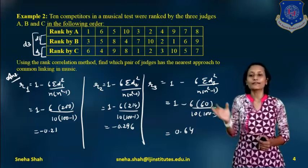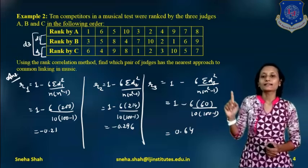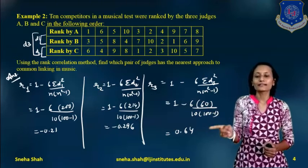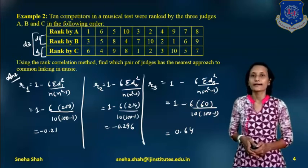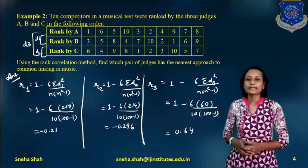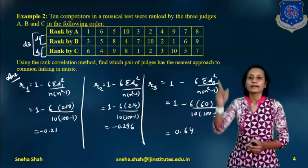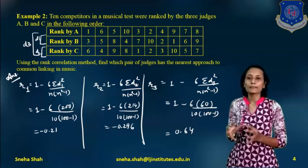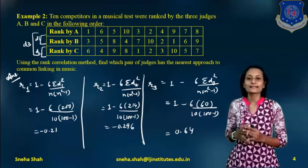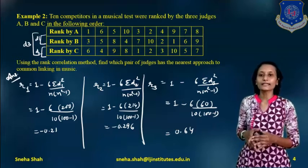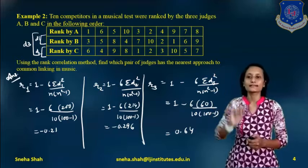Now comparing R1, R2, and R3: R1 and R2 are close to each other and are negative, while R3 is maximum at 0.64. This means the approach of judges A and C is nearest to each other. Therefore, the nearest approach to the common liking in music is shown by judges A and C.